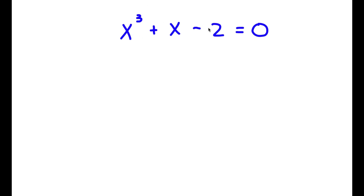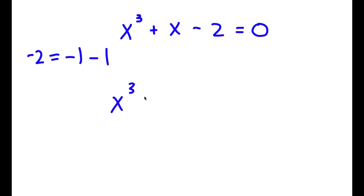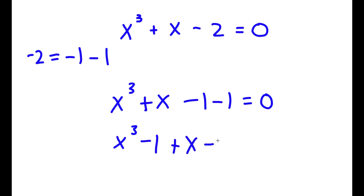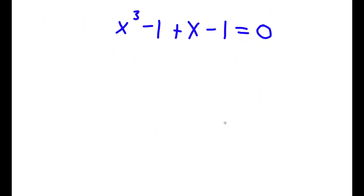Alright, so now I have x to the power of 3 plus x minus 2 is equal to 0. Now negative 2 is the same thing as negative 1 minus 1. So I'm going to replace negative 2 with negative 1 minus 1, giving me x cubed plus x minus 1 minus 1 equals 0. Switching the order, I get x cubed minus 1 plus x minus 1 equals 0. Now 1 is the same thing as 1 to the power of 3, so I have x cubed minus 1 cubed plus x minus 1 equals 0.